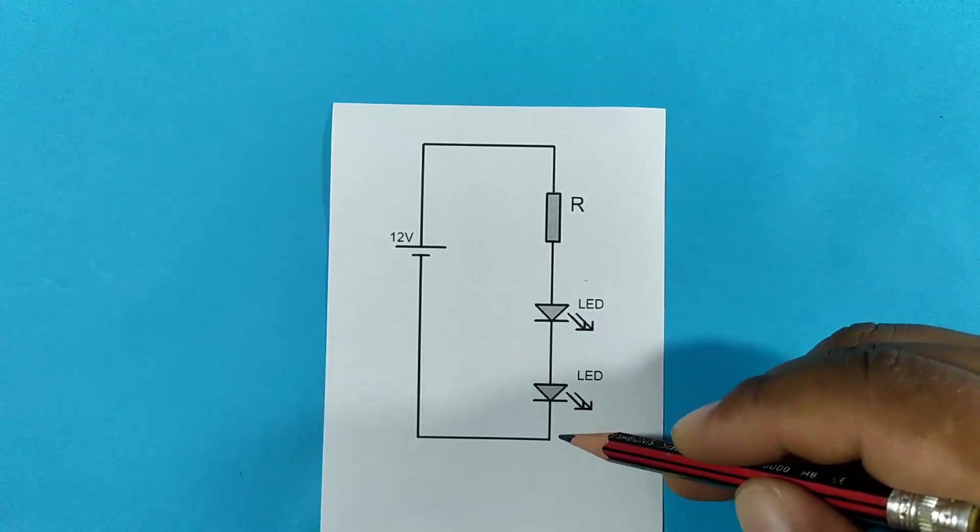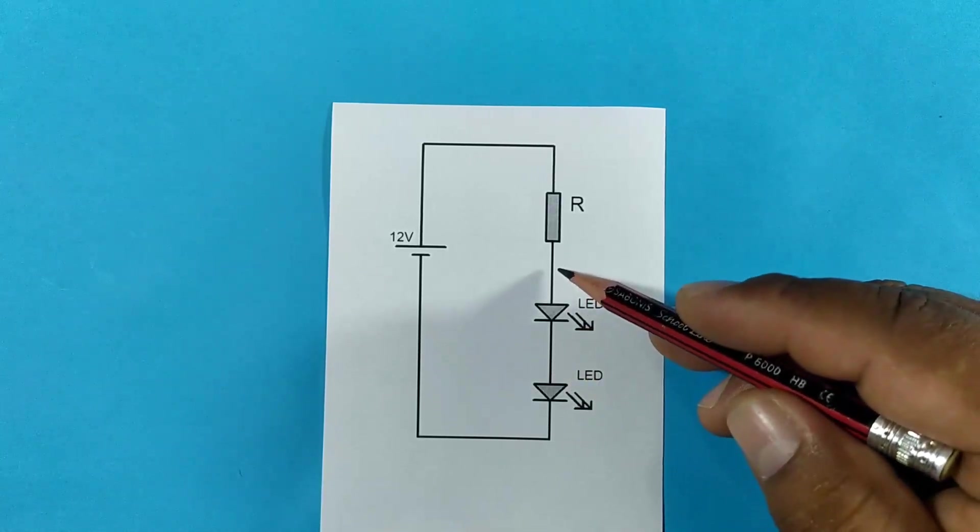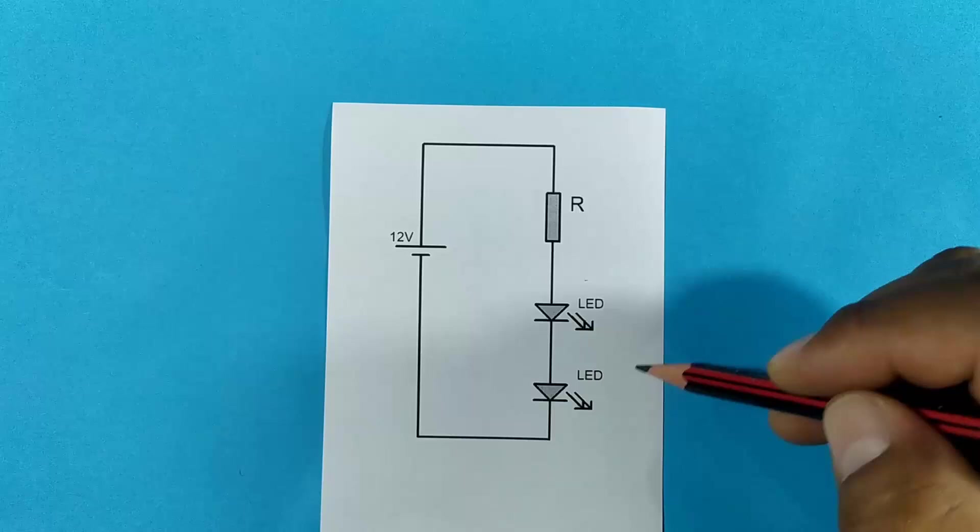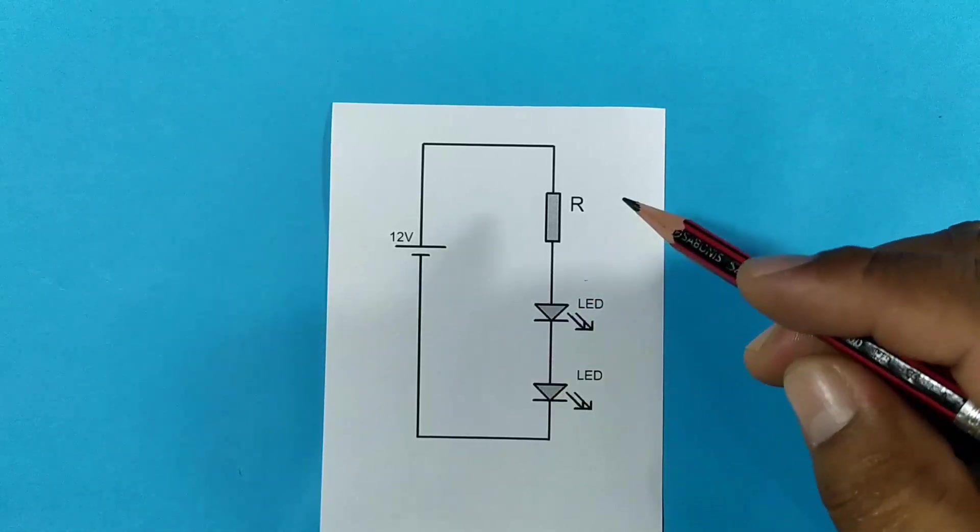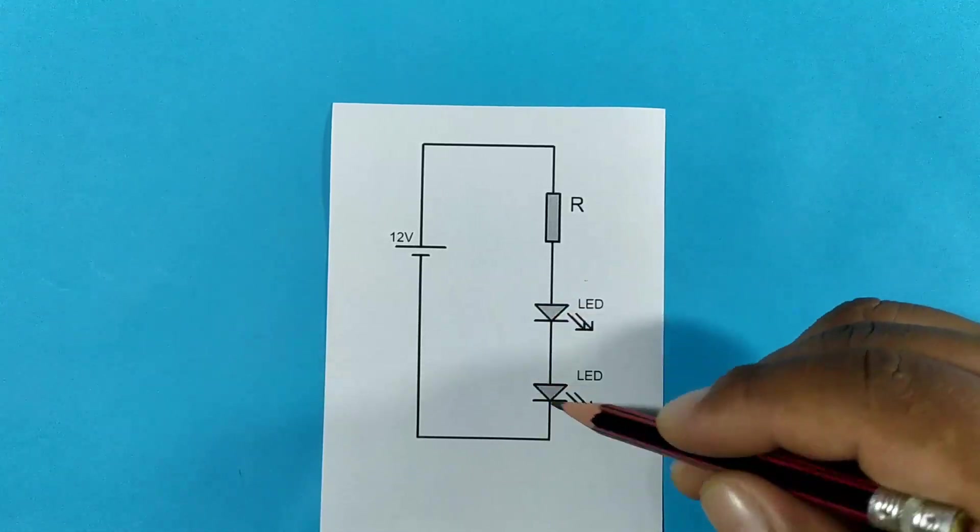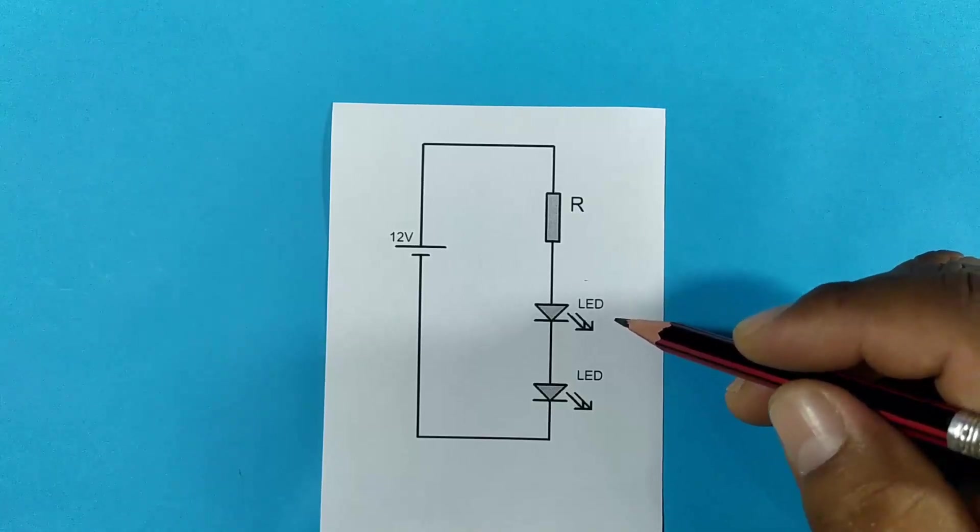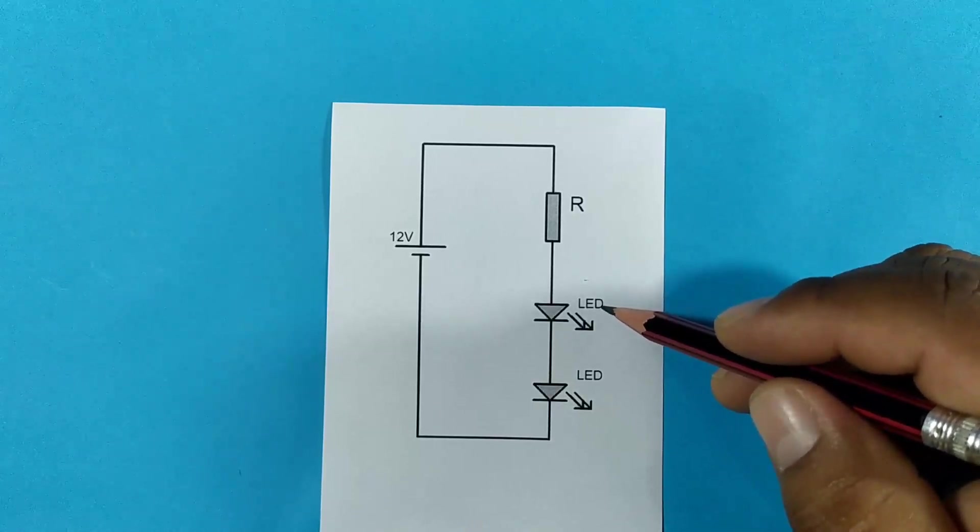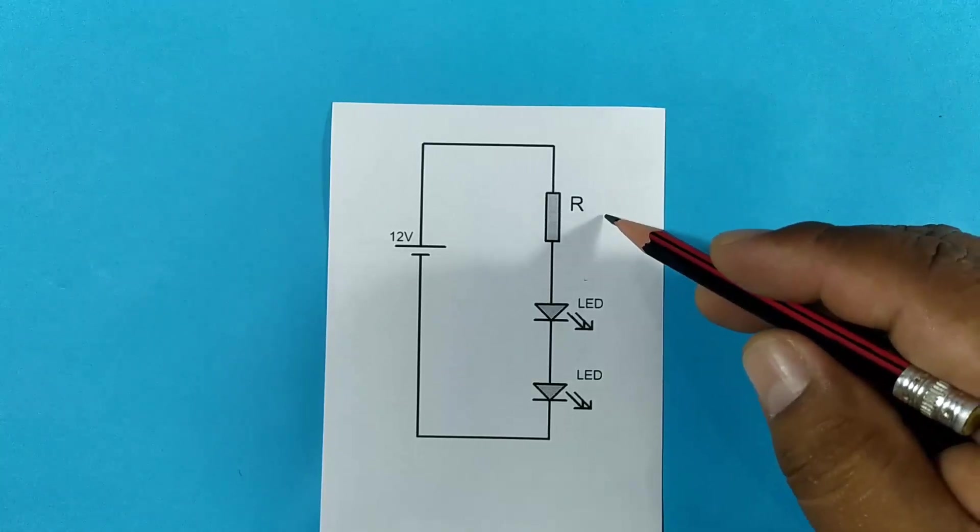In this way, you can continue until you manage to connect 6 or 5 LEDs as a recommendation for when you use 12 volts. By using 5 LEDs, 10 volts would remain on all the LEDs, and the remaining 2 volts would remain on the resistor.